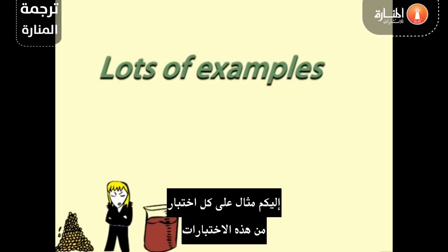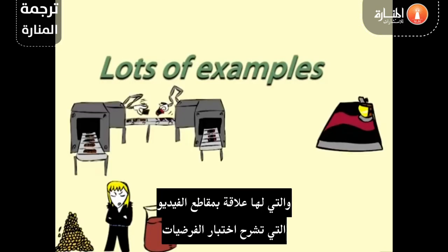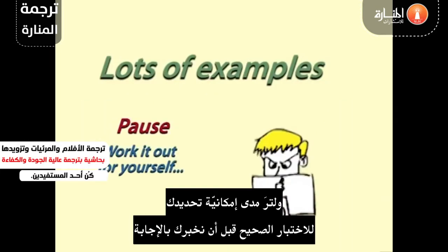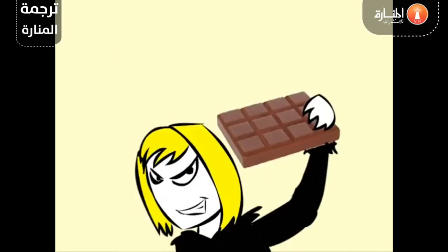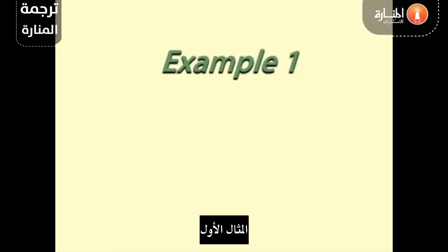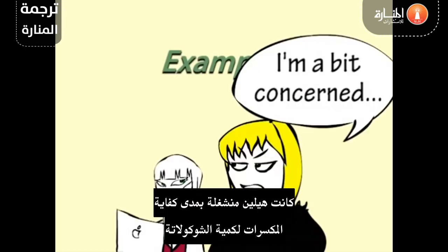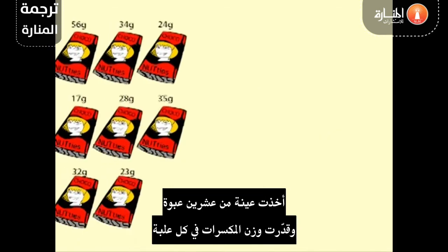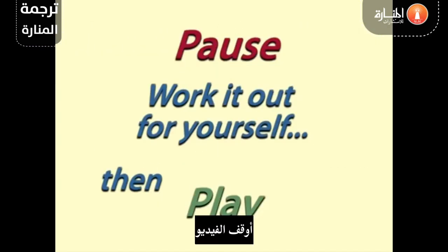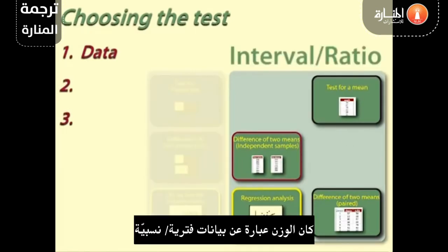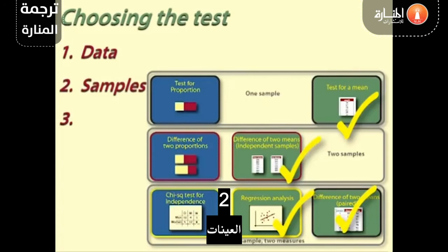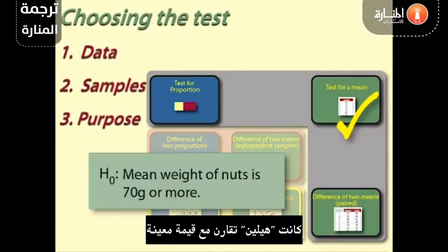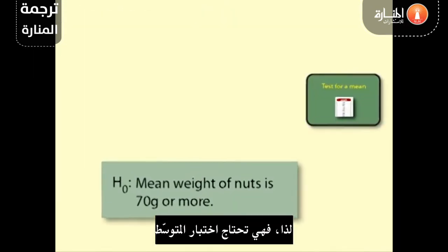Here is an example for each of these tests, relating back to our other videos on hypothesis testing. After each description of the scenario, pause the video and see if you can identify the correct test before we tell you the answer. Helen is still selling choc-a-nutties. Example 1: Sufficient nuts. Helen was concerned whether the quantity of nuts was sufficient in her choc-a-nutties. She took a sample of 20 packets and found the weight of nuts in each packet. 1. Data: The weight was interval ratio data. 2. Samples: There was just one sample of 20 packets. 3. Purpose: Helen was comparing against a given value. Thus, the test she needs to use is test for a mean.